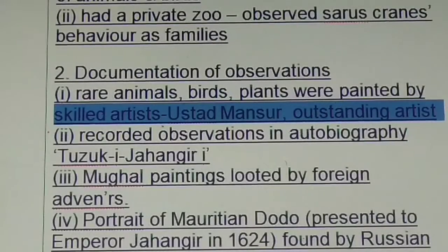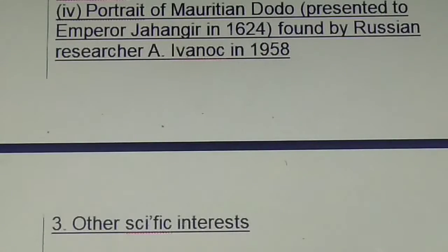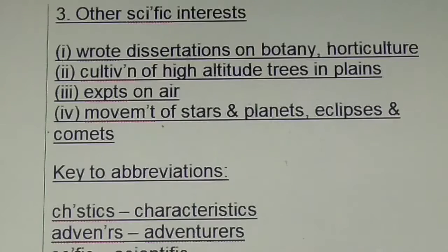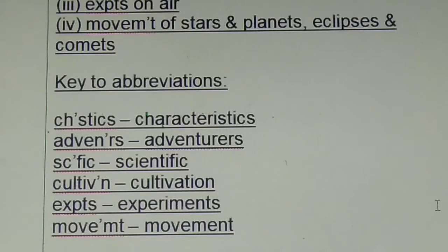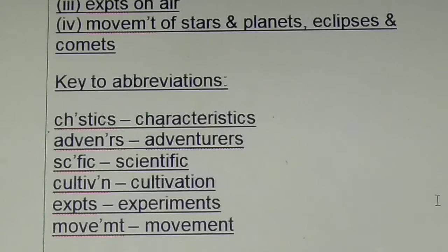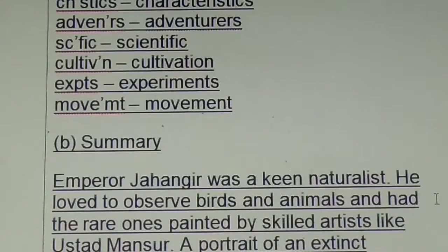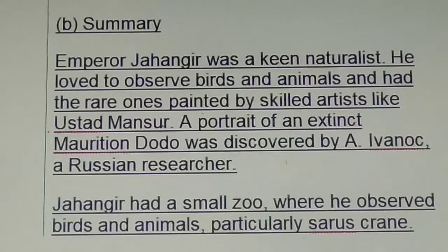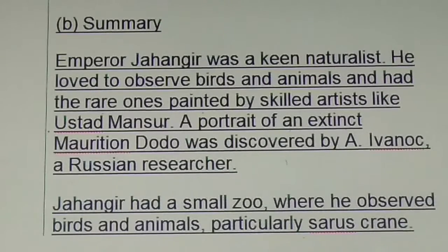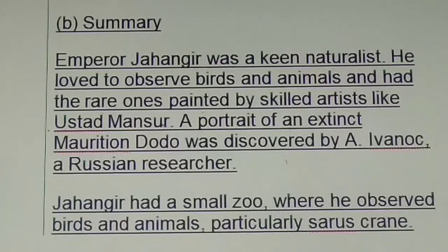See how it is written in points, children. How the abbreviations are used. Then you have to write: 'Key to abbreviations' on top, and then write the word and the abbreviation used for that word. And this is how you are supposed to abbreviate. Then the summary, children — this is how you have to write the summary. It is given in the question: 80 words. So this is how you have to write the summary, children.